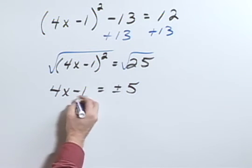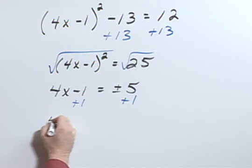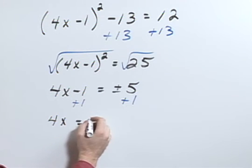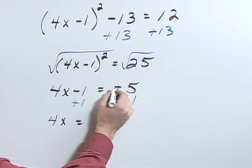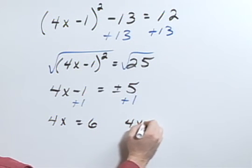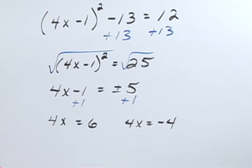Next, let's add 1 to both sides. Well, 4x equals, really we need to think about this as two ways. One is if that was a positive 5 plus 1, I would have 6. And if it was a negative 5, I would have negative 4.